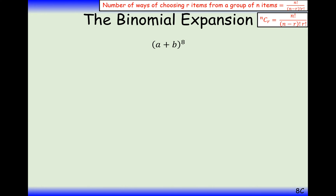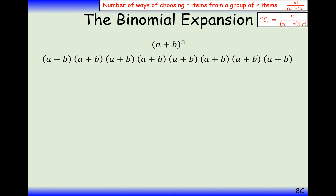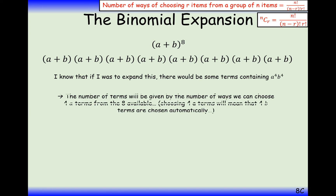Binomial expansion is the quick way we can expand high powers on brackets if it's in the form a plus b. For example, with (a+b) to the power of 8, you could multiply all eight brackets out, but that's probably not the easiest way. We can use the binomial expansion instead of writing out Pascal's triangle down to the eighth level and copying out all of those coefficients.